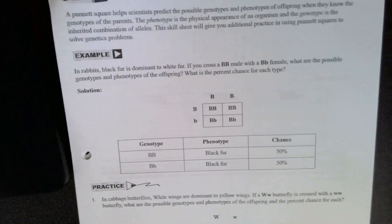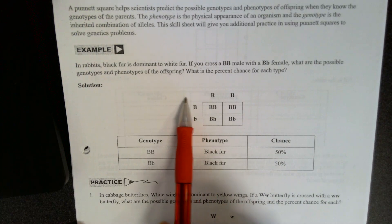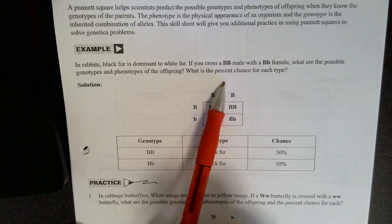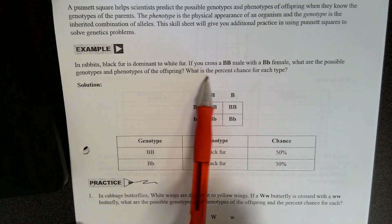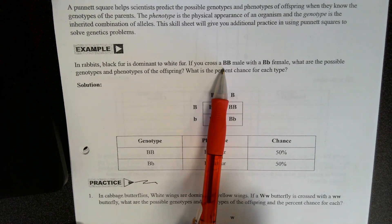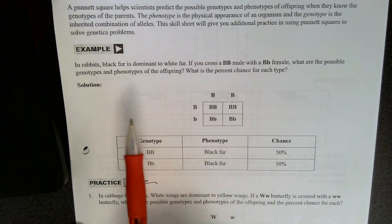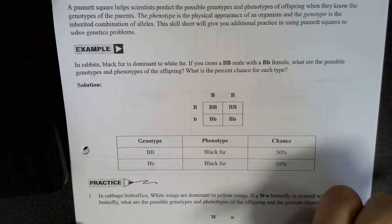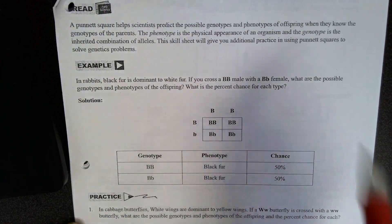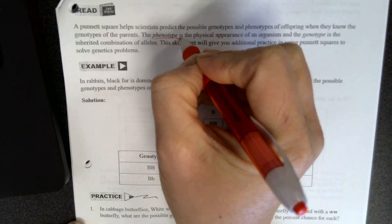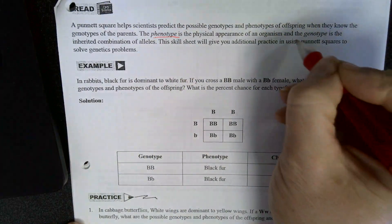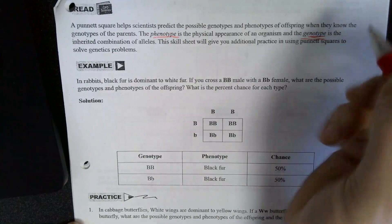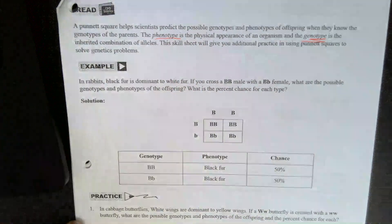Okay, so all the problems on this page are going to be set up like this. So you kind of have a word problem. Sometimes the word problem gives you the genotype. Sometimes you have to figure it out. To do Punnett Squares, you need to know that phenotype means physical appearance and genotype means the genetic combination of alleles.